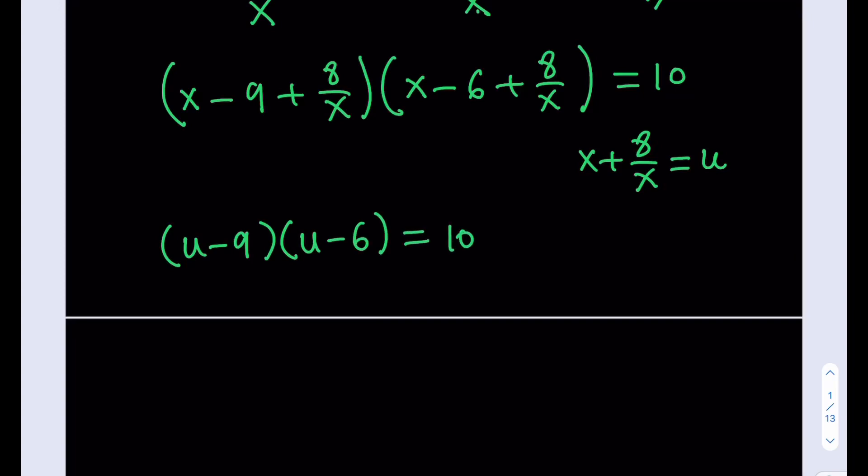Now, what is good about this type of substitution is it immediately turns this quartic equation into a quadratic. That's what's nice about it. Let's go ahead and distribute and arrange the terms. We're going to get u squared minus 9u minus 6u, that's going to be minus 15u, and 9 times 6 is going to be 54, and that's equal to 10. If you subtract 10 from both sides, then we're going to end up with this equation, which is actually factorable because it has integer roots.